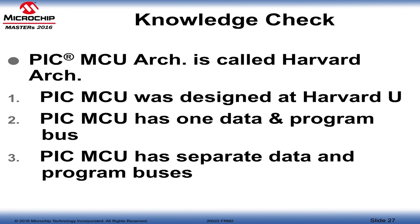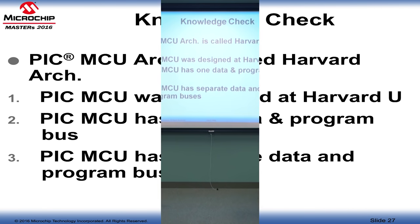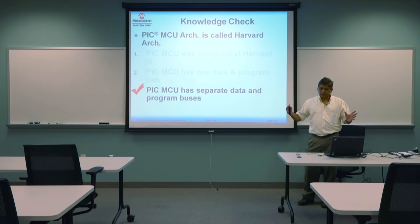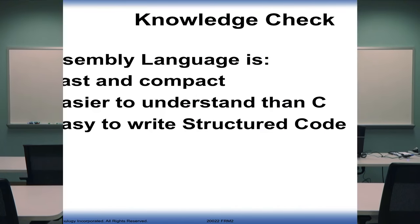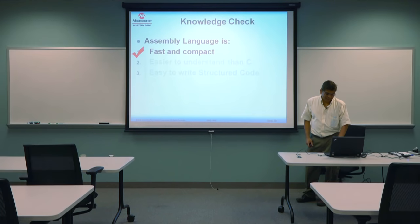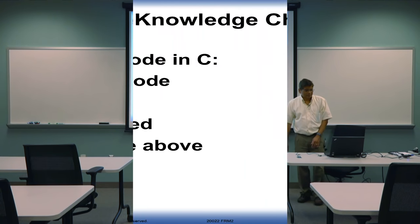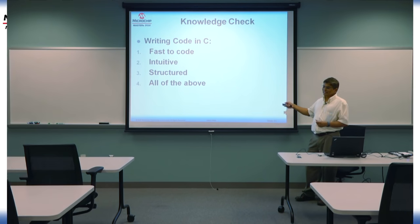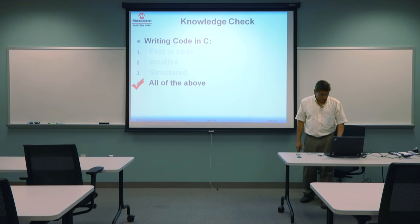Knowledge check: The PIC MCU architecture is called Harvard — because PIC MCU has separate data and program memory buses. That's number three — it's faster and more efficient. Assembly language is fast and compact, but C is definitely easier to understand and better for writing structured code. Writing code in C is faster, intuitive, structured — all of the above. It's very good and helps you along quickly.